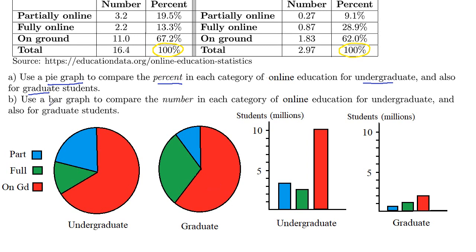Part B: they want us to use a bar graph — heights of bars — to compare the actual numbers in each category. I did two separate bar graphs, though you could combine these into a single one. If you do two separates, make sure your vertical scale is the same — this is in millions of students. The blue, which is partially online, goes up to a little higher than three for undergraduates, while the graduate blue is only about a third of the way up to one — about 10 times as big.